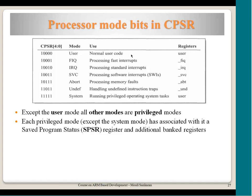The reason SPSR is needed: when changing from user mode to fast interrupt mode, the original CPSR value including the processor mode field and any conditional flags set during user code must be preserved. The FIQ service routine may perform arithmetic that overwrites the condition flags, so after the interrupt returns, without SPSR you would lose the pre-interrupt state. ARM solves this by making SPSR visible and having hardware automatically copy CPSR into SPSR on exception entry, so the previous state can be fully restored on return.